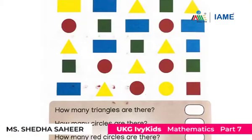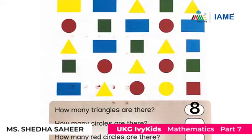Now like this, we will do some more counting practices. Are you ready to do the activities? Let's count the number of triangles in this picture. 1, 2, 3, 4, 5, 6, 7, 8. There are 8 triangles. Let's count the circles in this picture. 1, 2, 3, 4, 5, 6, 7. There are 7 circles.